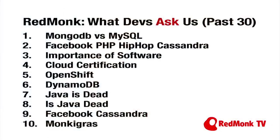One of the other things we do in the RedMonk Analytics product is look at and rank search queries. For the past 30 days, the top incoming queries to our property include Mongo versus MySQL, Facebook PHP Hip Hop, Cassandra, OpenShift, DynamoDB—and my favorites: 'Java is dead' and 'Is Java dead?' People are trying to tell you something about what they want and what they're curious about. We look and monitor it on a regular basis.